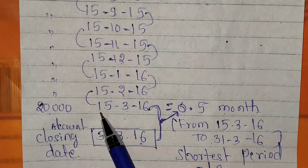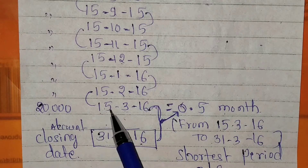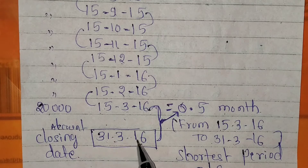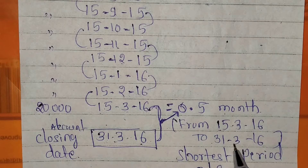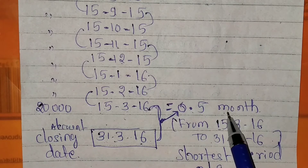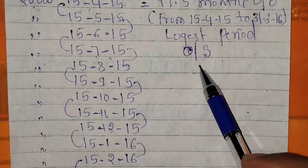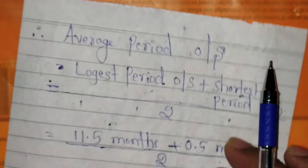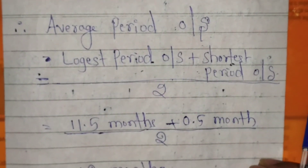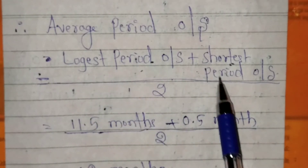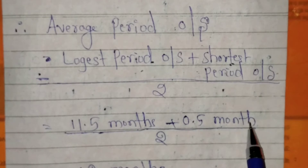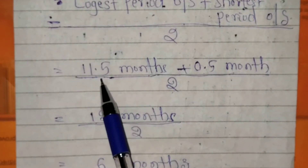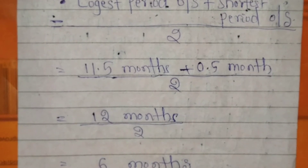The shortest period outstanding is from the last date of drawings to the date accounts are closed. The last date of drawings was 15-3-2016 and accounts closed on 31-3-2016, so the shortest period outstanding is 0.5 months. The average period outstanding formula is: longest period outstanding plus shortest period outstanding divided by 2, which is 11.5 + 0.5 = 12 ÷ 2 = 6 months.